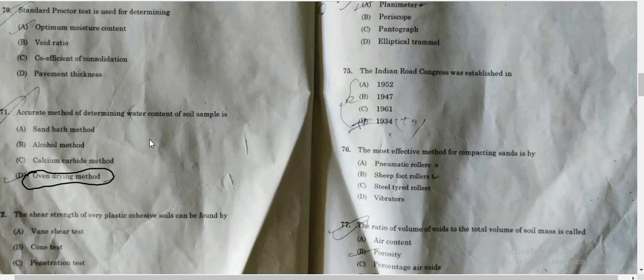Why is oven drying method accurate? Because oven drying method is used for 24 hours. The oven evaporates all the water from the soil. The other methods have limitations - sand bath method has no temperature control, so it can't be used with organic soil.